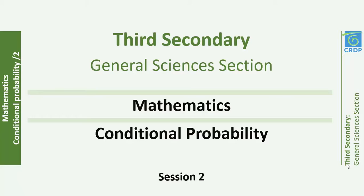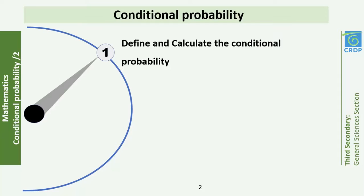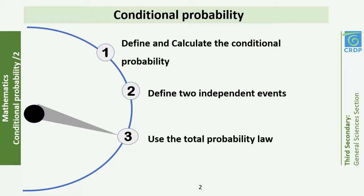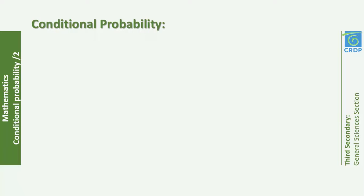Hello everyone and welcome to our session. This session is for the third secondary year, general sciences section. It's a mathematics chapter entitled conditional probability — one of the probability chapters you will see this year. This is our second session in this chapter. In the first session we explained how to define and calculate conditional probability, how to define two independent events, and how to use the total probability law. Today we will do an application on them.